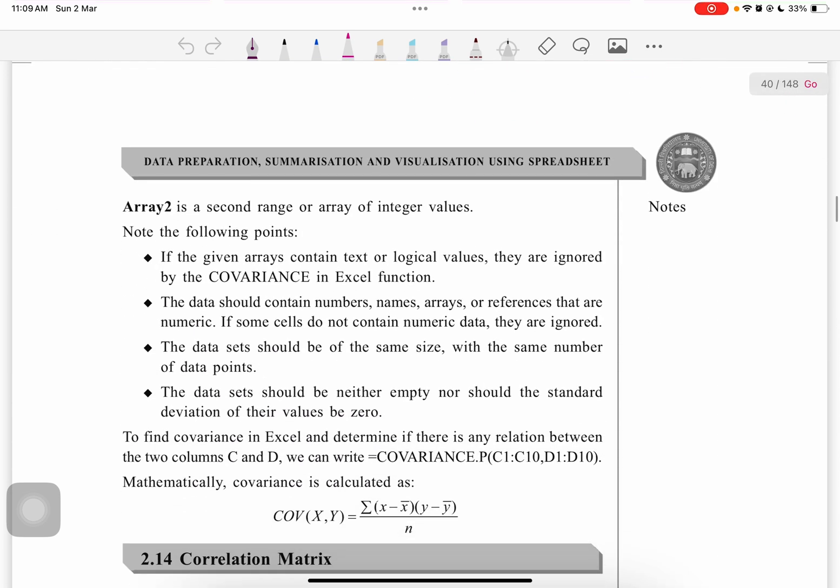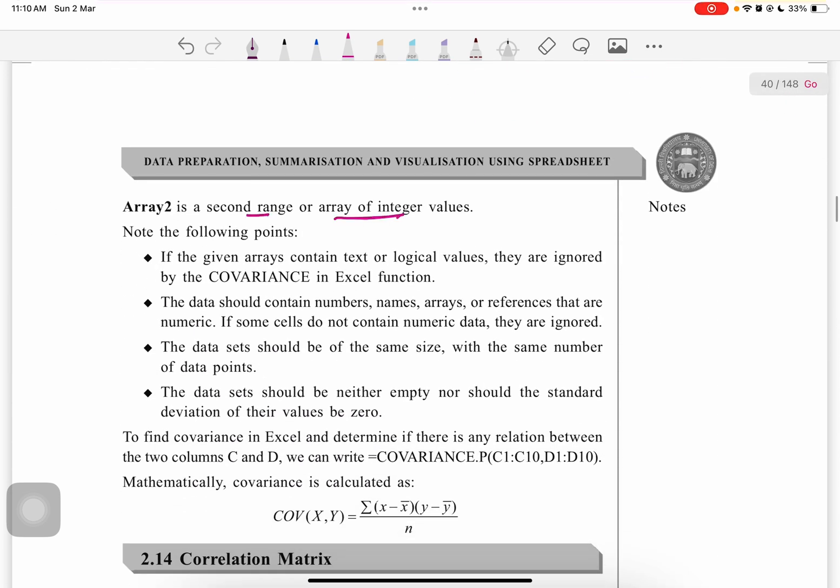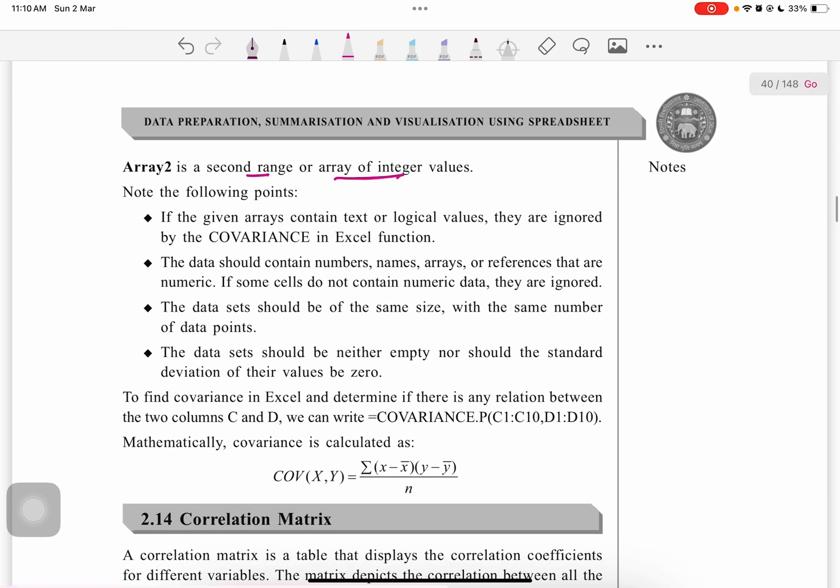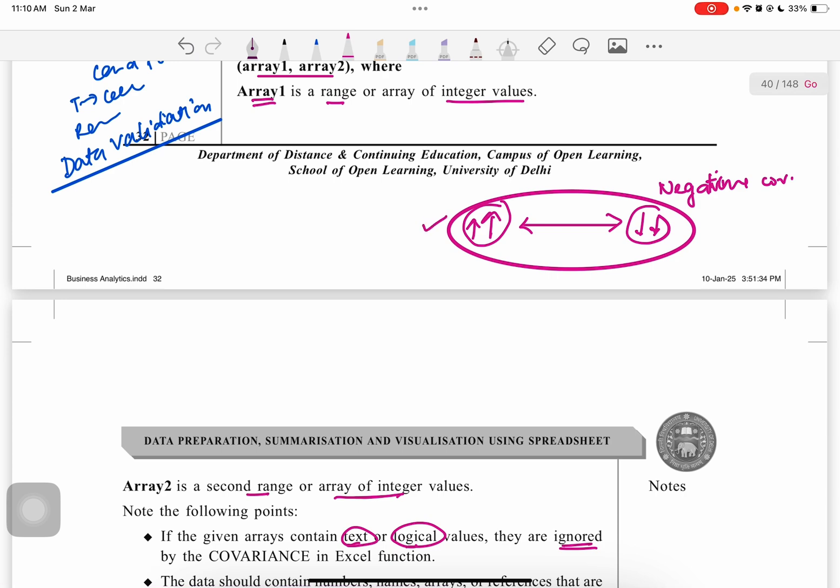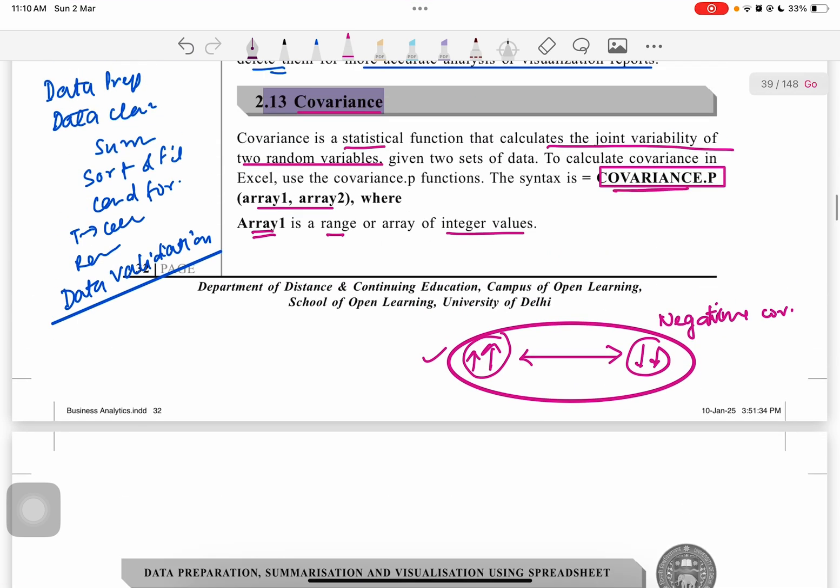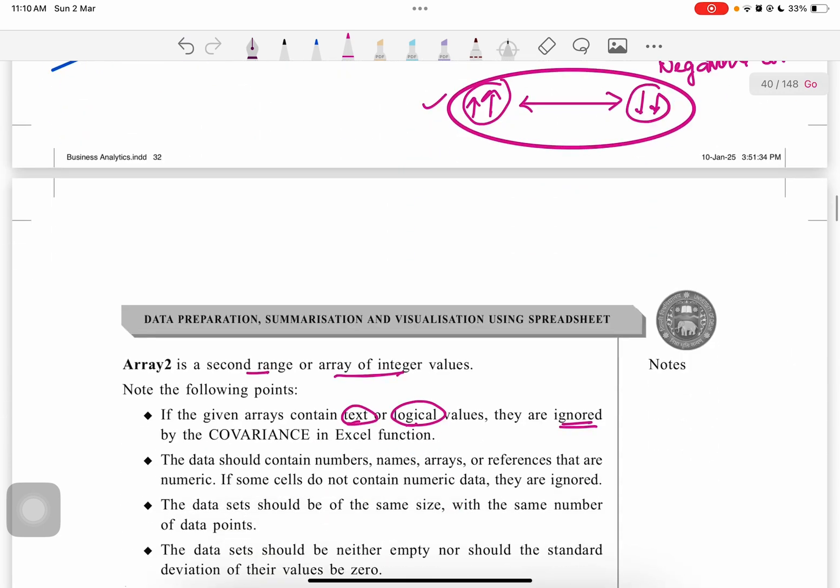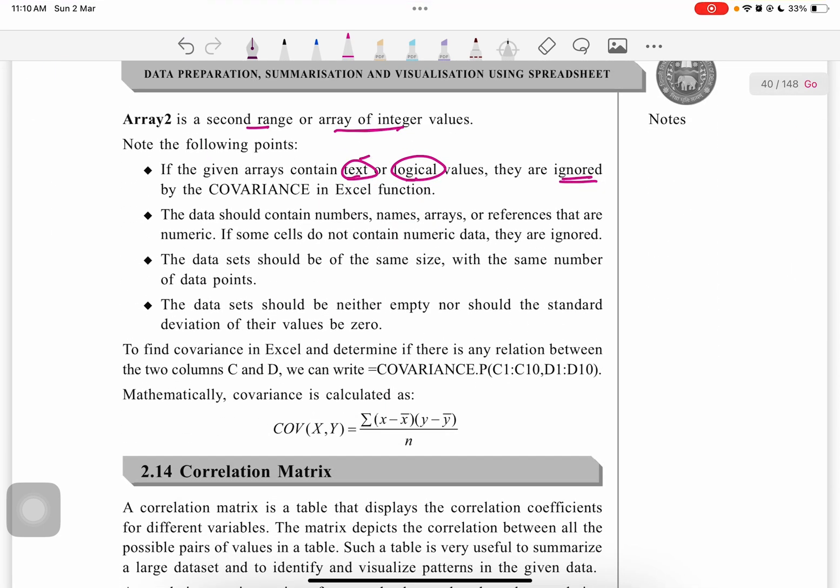Note the point that if the given arrays contain text or logical values, they are ignored by the covariance function in Excel. In Excel, we have to use covariance only on numeric data because text and logical boolean operators would be ignored. Data should contain numbers, names, arrays, or references that are numeric.